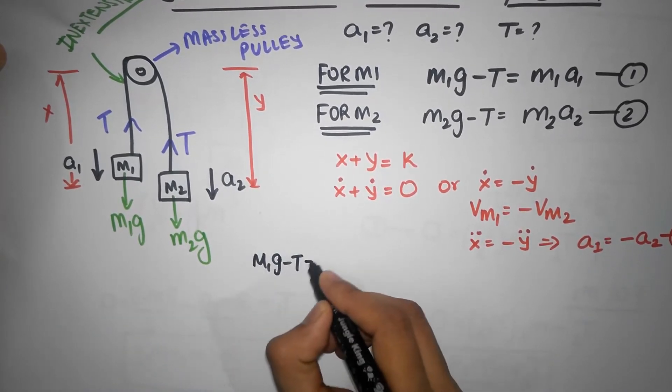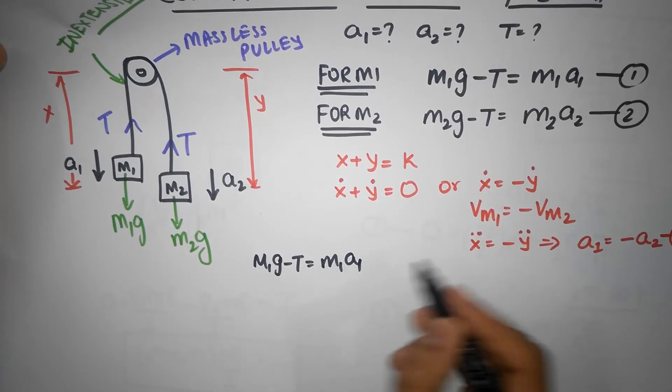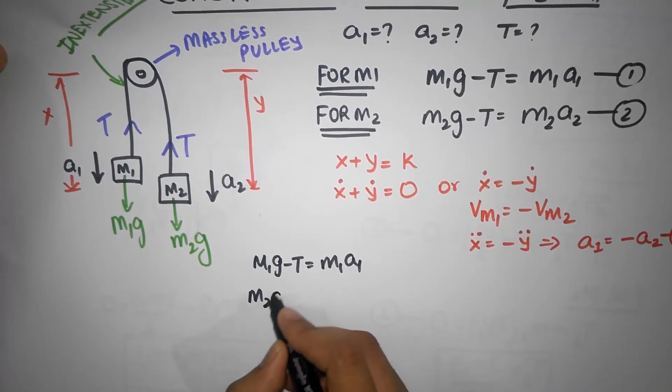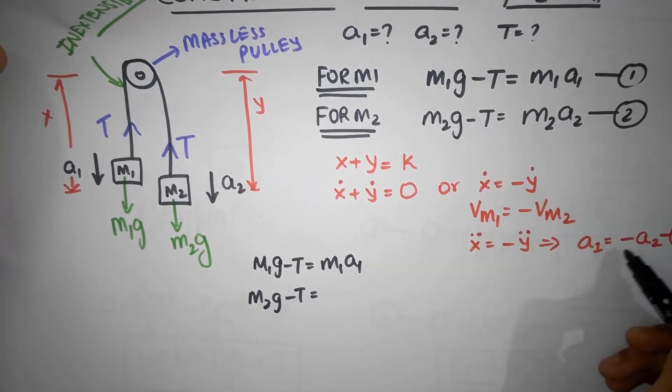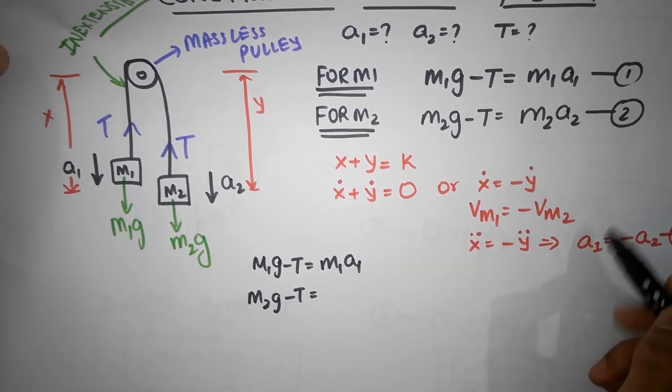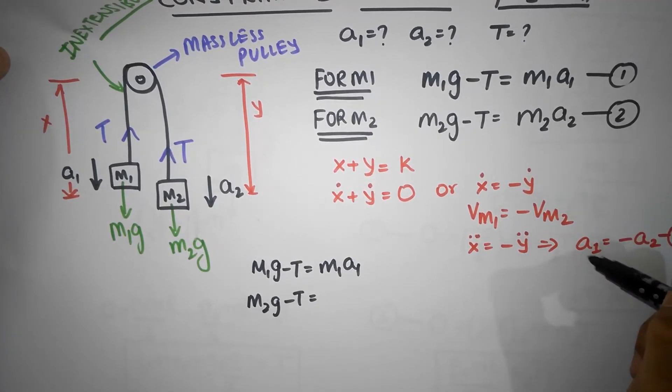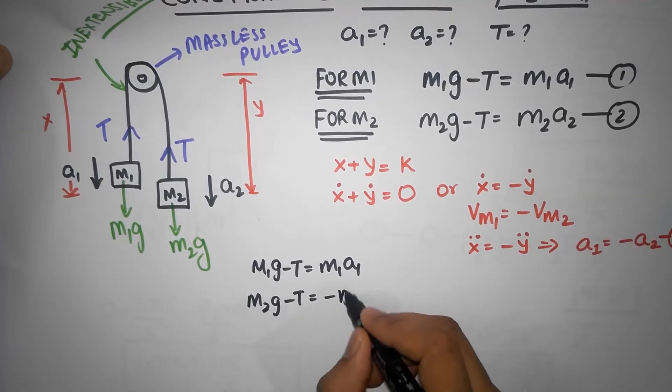M1g minus T equals M1a1. I'm going to substitute this equation over here, so that's going to be M2g minus T equal to M2, and A2 is minus a1. I'm going to substitute A2 as minus a1.